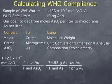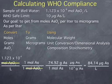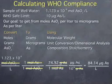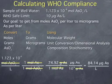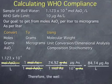This gives us 84.14 with units of micrograms arsenic atom per liter. We get these units because the moles of arsenic cancel, moles of arsenic atom cancel, and the grams of arsenic atom cancel, giving us 84.14 micrograms arsenic per liter in this sample of well water. Since the World Health Organization standard is 10 micrograms per liter, this well water is clearly unsafe to drink.